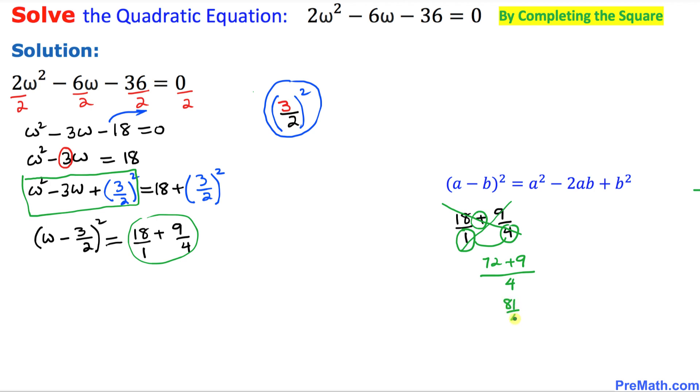So this thing becomes simply 81/4, and on the left hand side we have (ω - 3/2)².